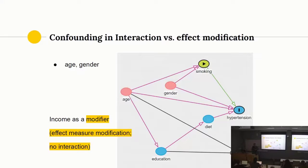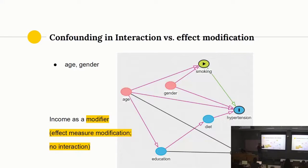Instead of stratifying, you could have just included an interaction term in the regression when fitting the model with smoking and income, and you could have obtained exactly the same estimates that you would have obtained in the stratification example, if you had a large enough sample size. So what is the definition of effect modification? When you stratify based on the effect modifier and look at treatment effect estimates in those two groups, and if they are not similar, you say that there is an effect modification present in this analysis.